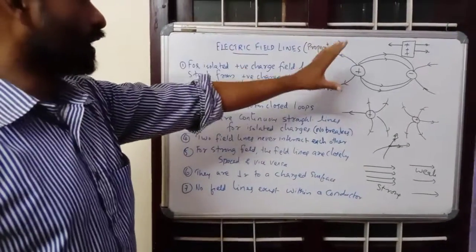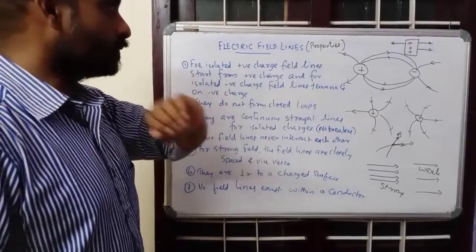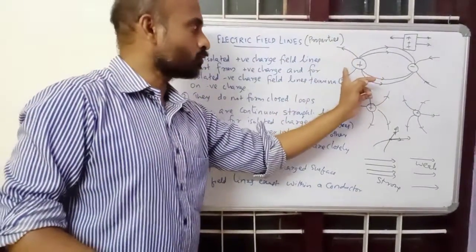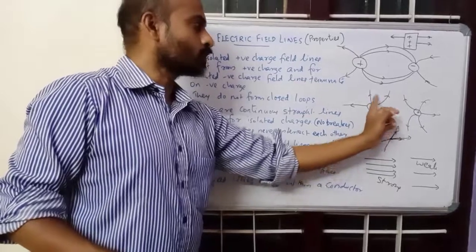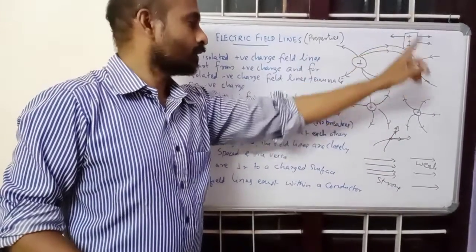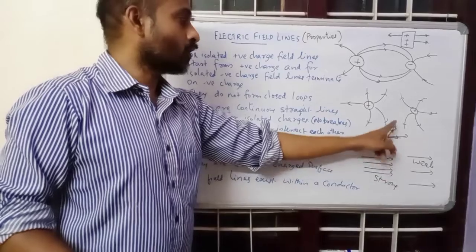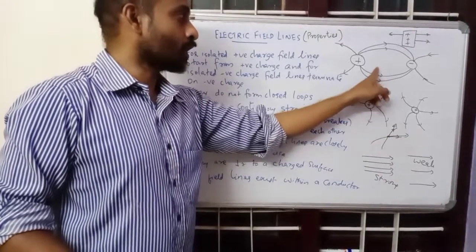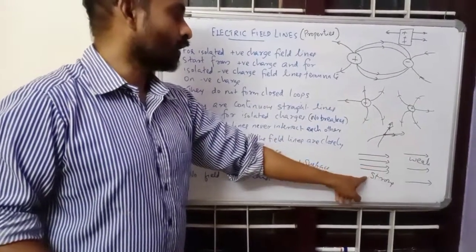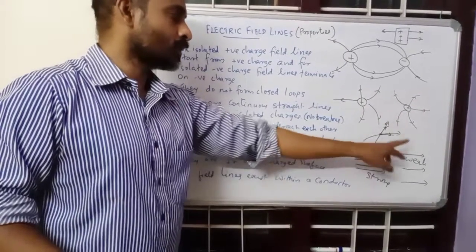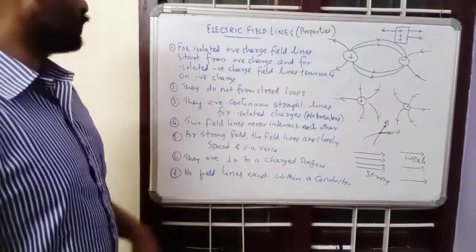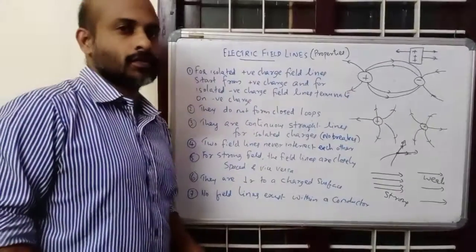These are the properties of electric field lines. We covered: single positive charge, single negative charge, a system of positive and negative charges, two positive charges, a charged conductor, the fact that two field lines cannot intersect, that field lines cannot form closed loops, and that for a strong field the lines are closely spaced while for a weak field they are distant apart. These are the main properties of electric field lines.